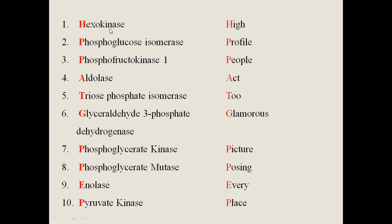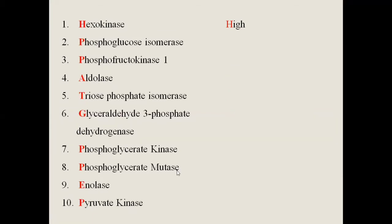There are 10 enzymes involved in glycolysis. These 10 enzymes make it possible to convert one molecule of glucose into two molecules of pyruvate. In the first reaction, glucose is converted to glucose-6-phosphate by the enzyme hexokinase, and the last enzyme that produces two molecules of pyruvate from one molecule of glucose is pyruvate kinase.